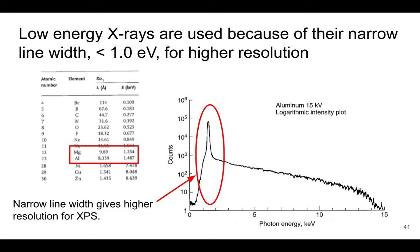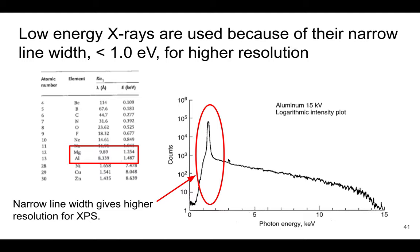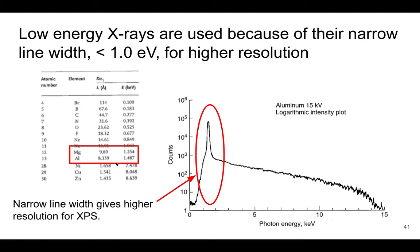The reason we use aluminum or magnesium is that they have lower energy, which produces a very narrow K-alpha peak. That narrow line width gives us higher resolution. Looking at the curve shown here — aluminum at 15 kV — the K-alpha peak is very narrow in energy. Magnesium and aluminum both have much lower energies compared to copper, and that lower energy means a narrower line width and therefore better resolution.